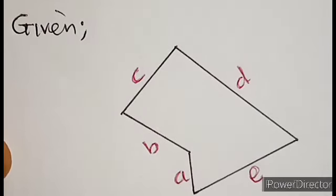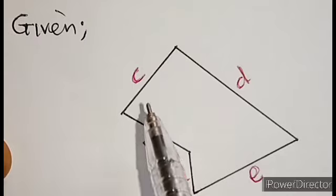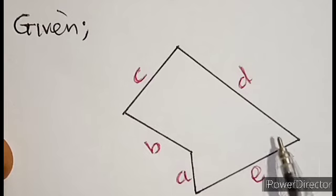So if I am to find the perimeter of this shape, I will simply add up all this path. That will be A plus B plus C plus D plus E. That will be the perimeter of this shape.